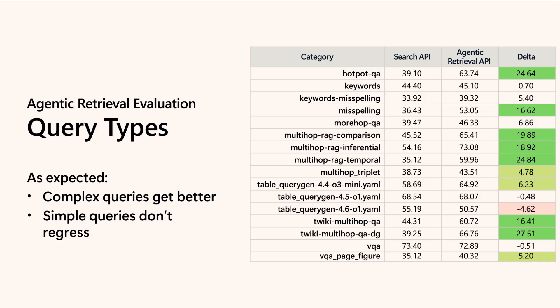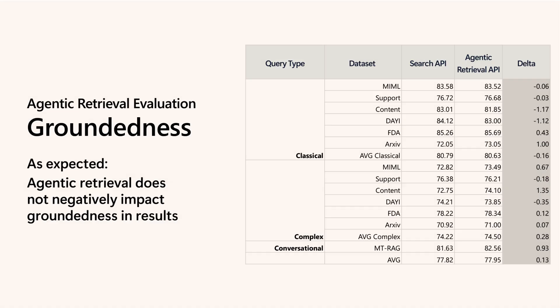Importantly, agentic retrieval maintains stable performance for straightforward keyword searches — it neither degrades nor complicates these cases. The true advantage appears with complex or multi-hop queries where traditional search falters. Additionally, metrics show consistent reliability across simple and complex queries alike, ensuring agentic retrieval advances coverage and relevance without compromising trust, a necessity for enterprise-grade AI systems.